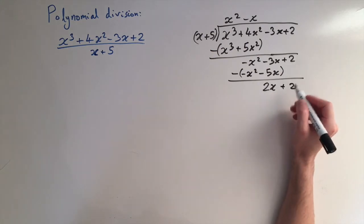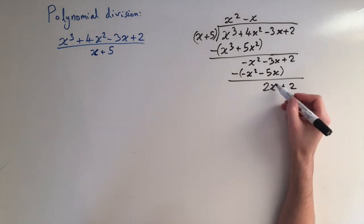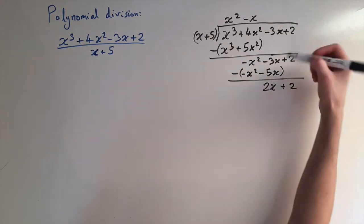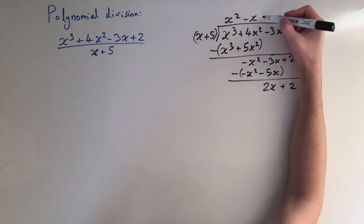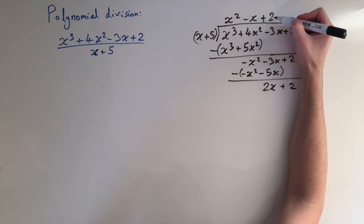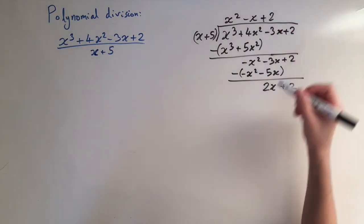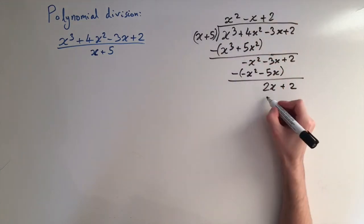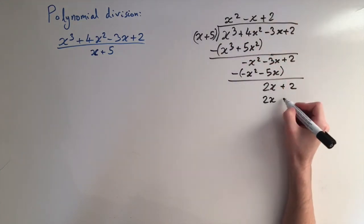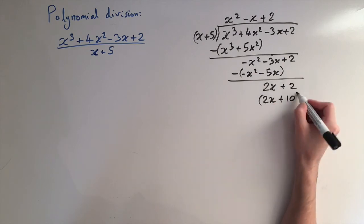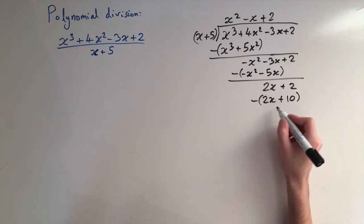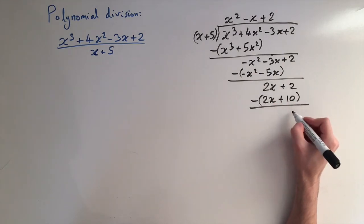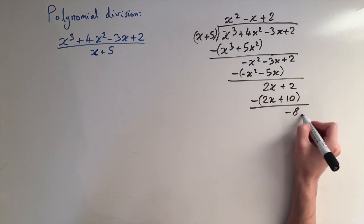So our third line is 2x plus 2. One more time — to get rid of the x terms we divide 2x by x, which gives an answer of 2. We write 2 up here, then multiply 2 by this term, giving us 2x plus 10. When we subtract this, we see our remainder is not zero — it's going to be minus 8.